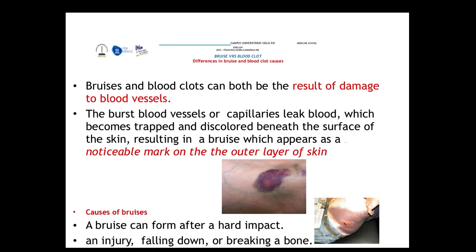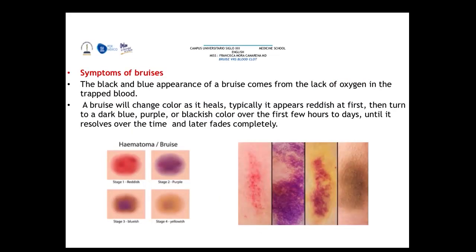This process can occur after a hard impact, an injury, falling down, or even breaking a bone. The black and blue appearance of the bruise is due to the lack of oxygen in the trapped blood. The bruise changes color as it heals — reddish at the beginning, then dark blue, purple, or blackish, and over the days it will resolve and fade completely.